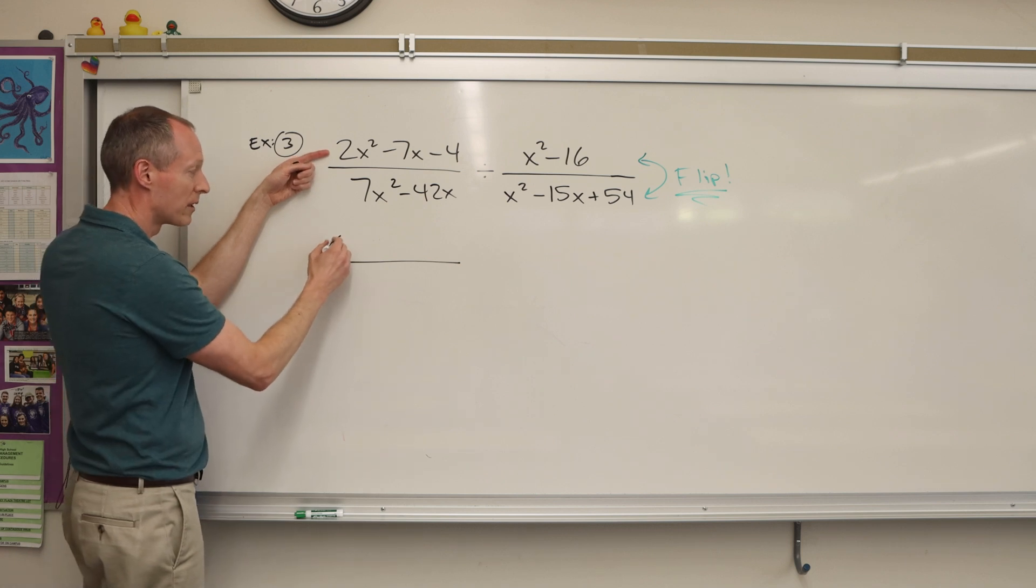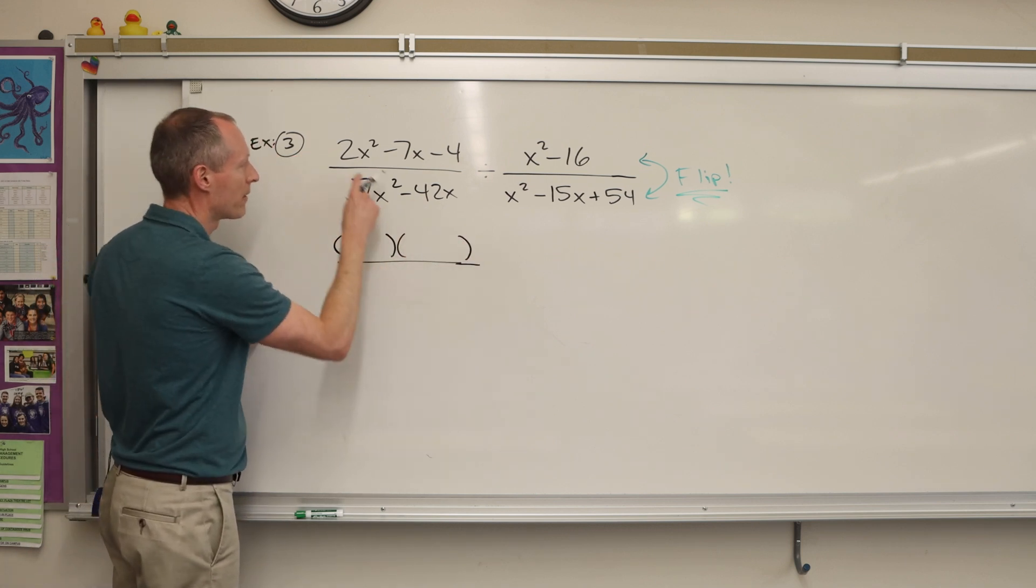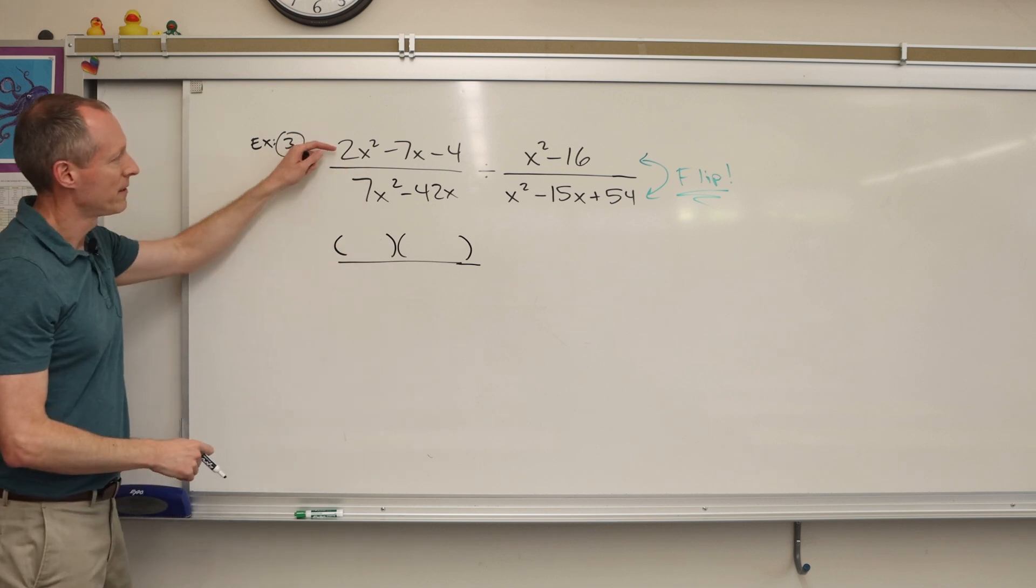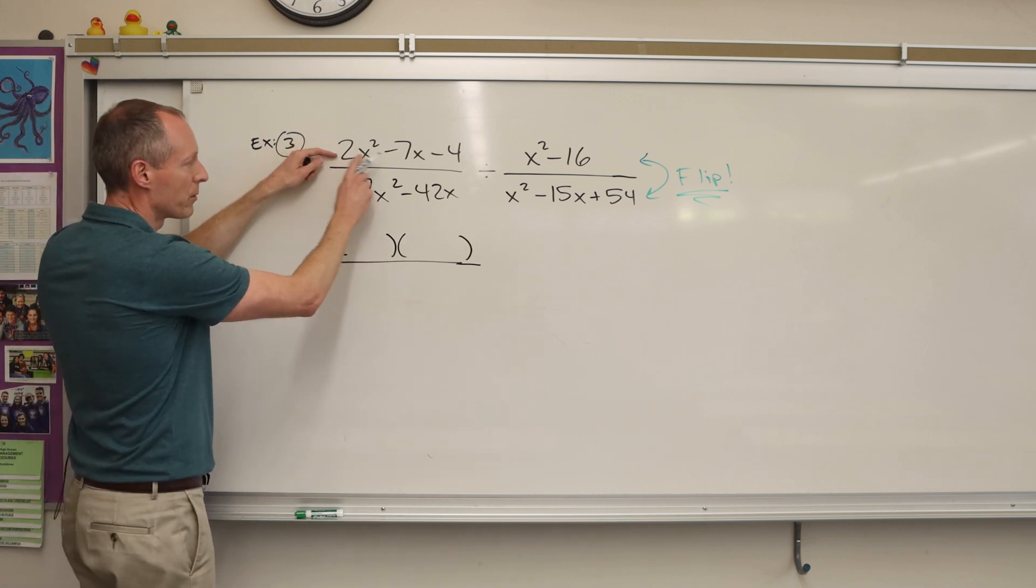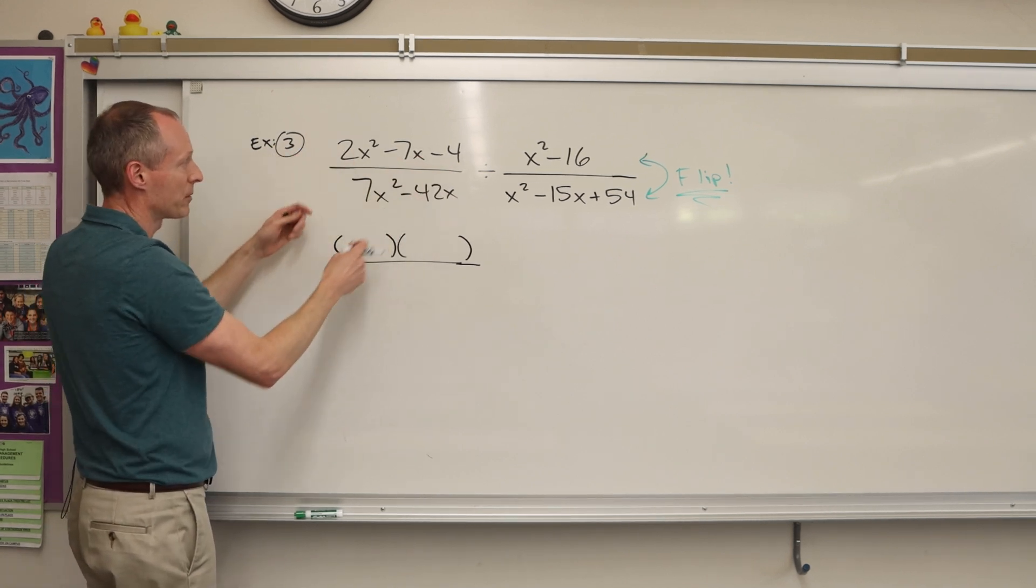So factoring this was a little more challenging. I was seeing what you could do. Now there is a number in front of the x squared, so it makes it a little more difficult. But notice there's no GCF, there's no greatest common factor, so we have to go with this.